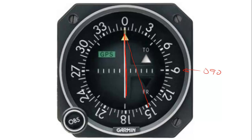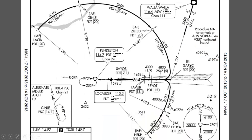Once you see that 4-degree deflection or so, twist the OBS knob, center back up the needle, and now look back to the reference heading. Let's say it was 5 degrees off — in this case, to center it back up we ended up at 085. That's the new reference heading; that's what we're going to fly until we get some more deviation. Keep in mind, all of this is for a no-wind scenario. If there's wind, you're going to have to make some sort of adjustment to make sure you don't get blown either inside or outside of the arc.